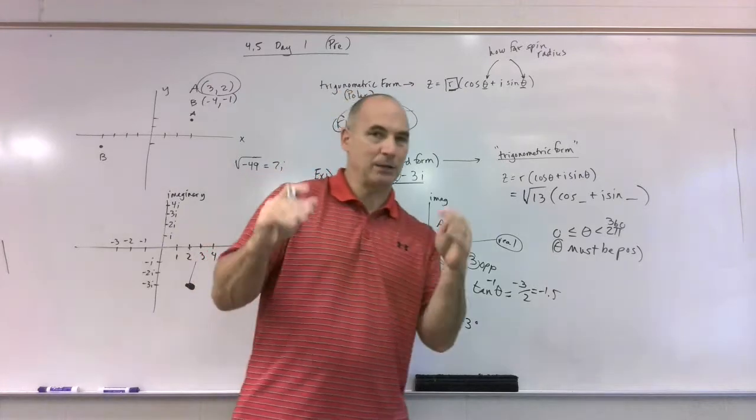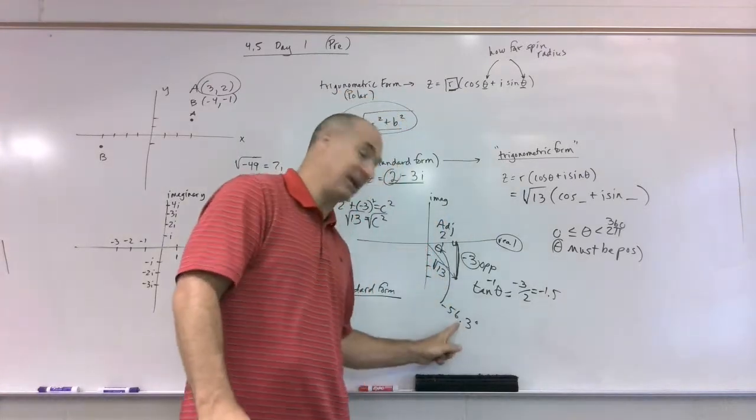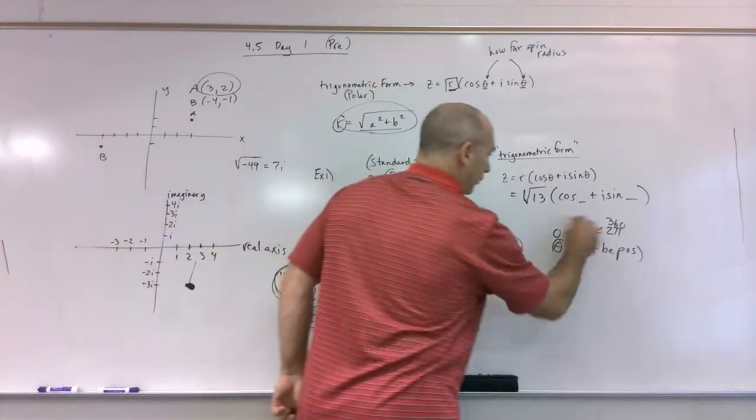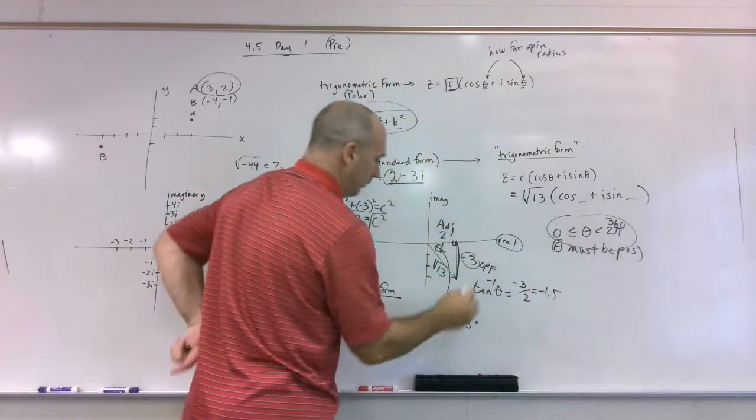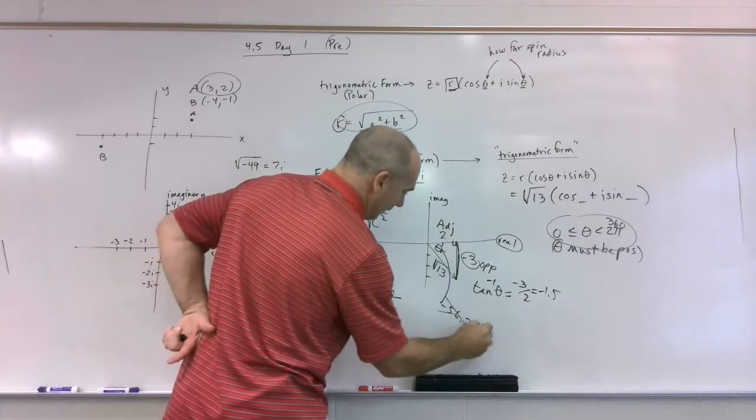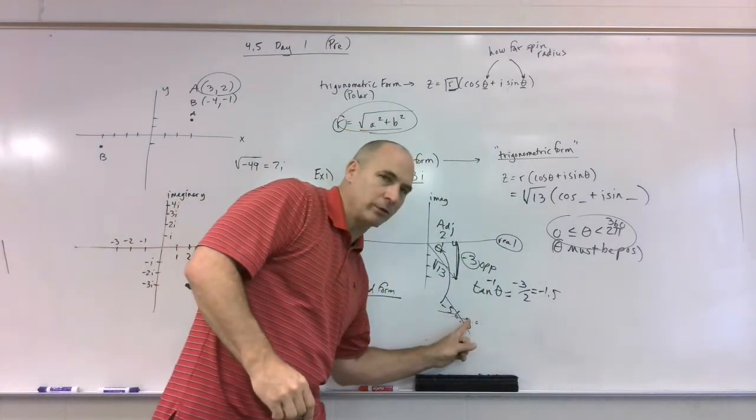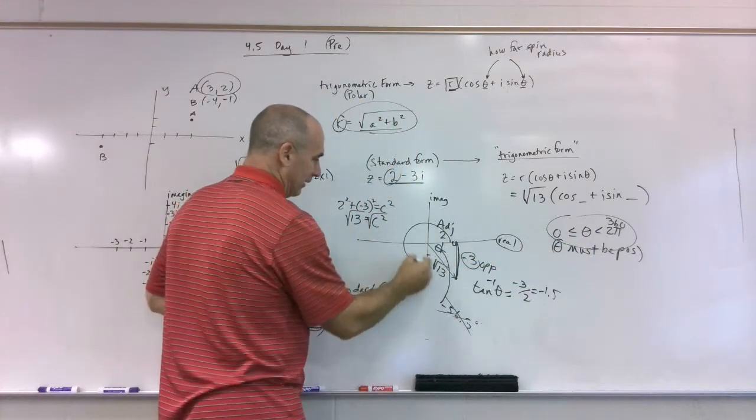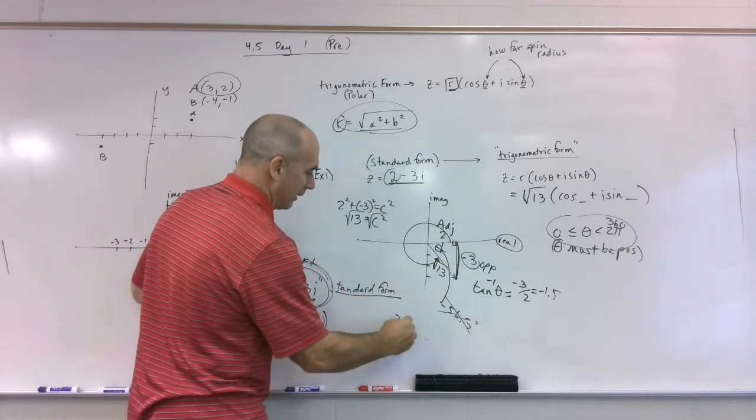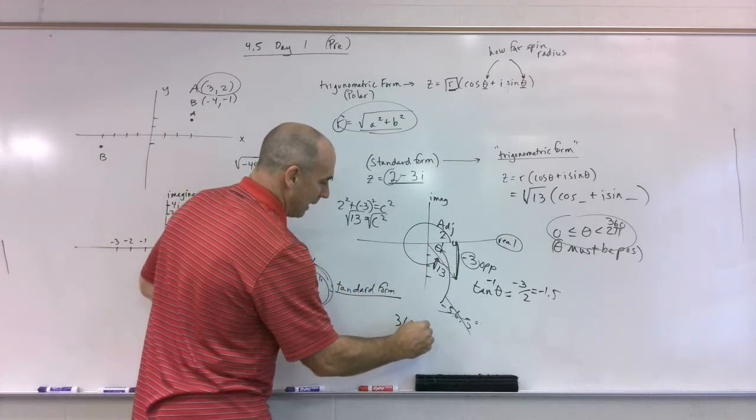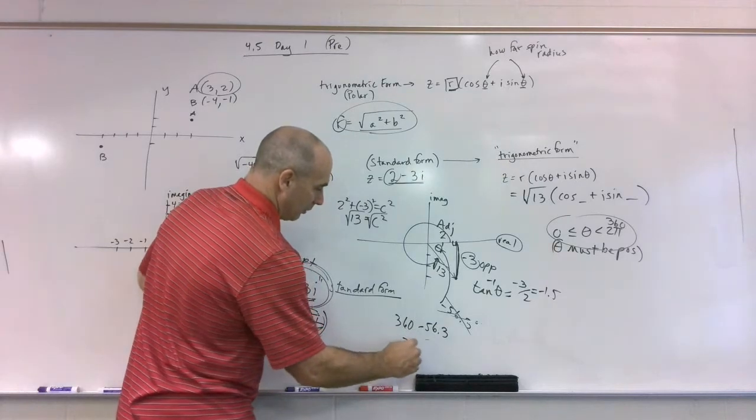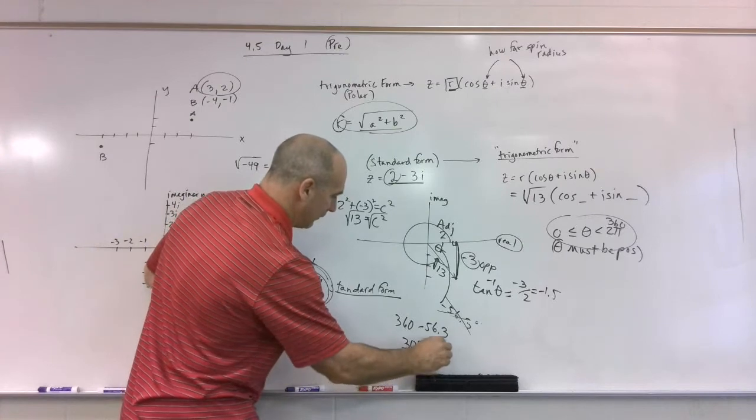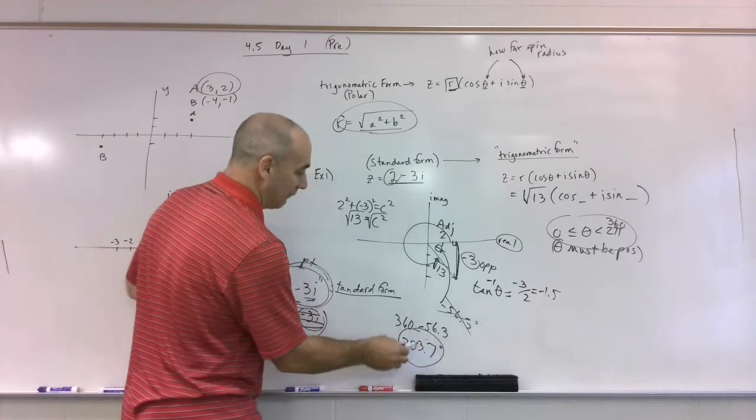So this guy right here is negative 56.3. And if you're taking a multiple choice quiz or test and that thing's like option A, you're going to be very tempted to circle it. But remember, this clue says, ah, ah, ah, negatives are not acceptable. See, it's not wrong. You just need to read the clues. So what that means is I've got to answer this. How far did I spin my spinner? So now I've got to go 360 minus 56.3, which would be 303.7 degrees. Now I found it.